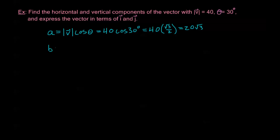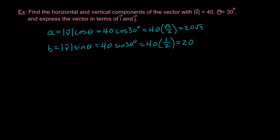Now let's look at our vertical component B. B is the magnitude of V times sine theta. The magnitude of V is still 40 and theta is still 30 degrees. So we get 40 times sine of 30 degrees, which is 1/2, giving us B equals 20. So my horizontal component is 20 root 3 and vertical component is 20. The last thing asked is to express the vector in terms of I and J: V equals 20√3 I plus 20 J.